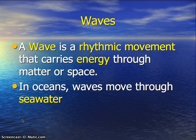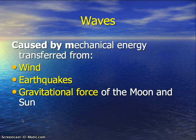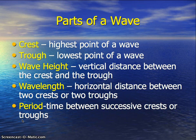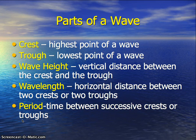In oceans, the waves move through seawater. Waves are caused by the mechanical energy transferred from three things: wind, earthquakes, or the gravitational force of the moon and the sun. There are five parts to a wave. The crest is the highest point, the trough is the lowest point, the wave height is the vertical distance between the crest and the trough, the wavelength is the horizontal distance between two crests or two troughs, and the period is the time between successive crests or troughs.